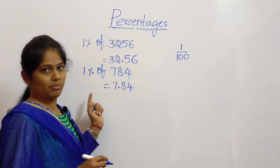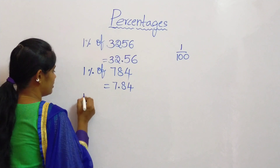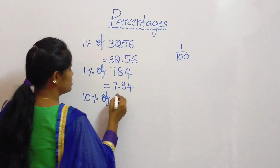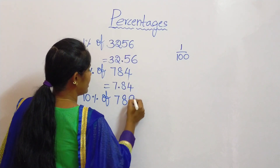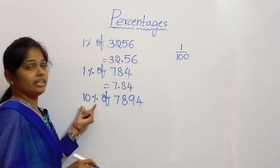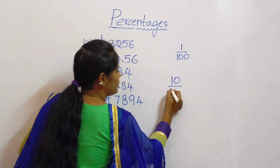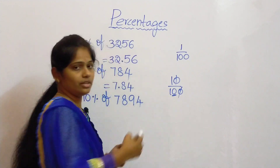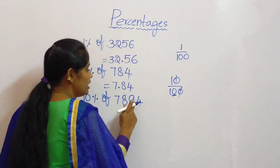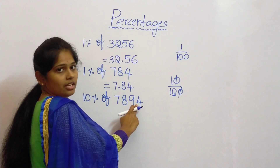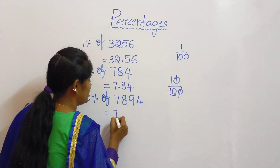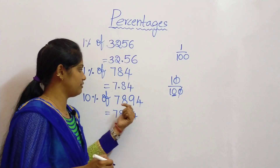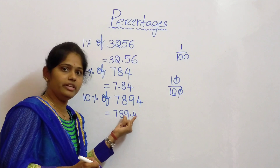Now we will learn about 10 percentage of any number. So 10 percentage of 789.4. Here 10 percentage means 10 by 100 — one zero gets cancelled, leaving 1 zero in the denominator. So after 1 place, put the decimal point. So it is 78.94. So 10 percentage of 789.4 is 78.94.